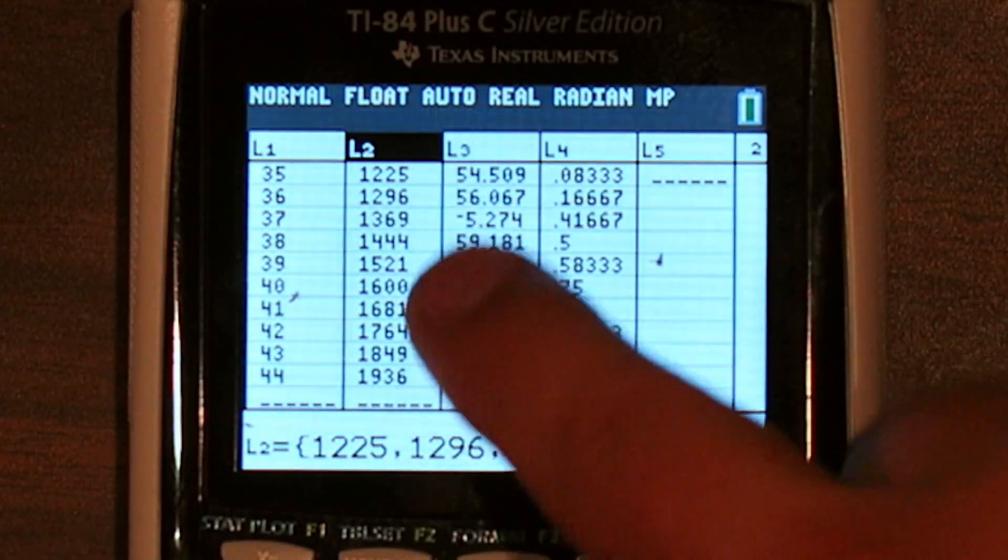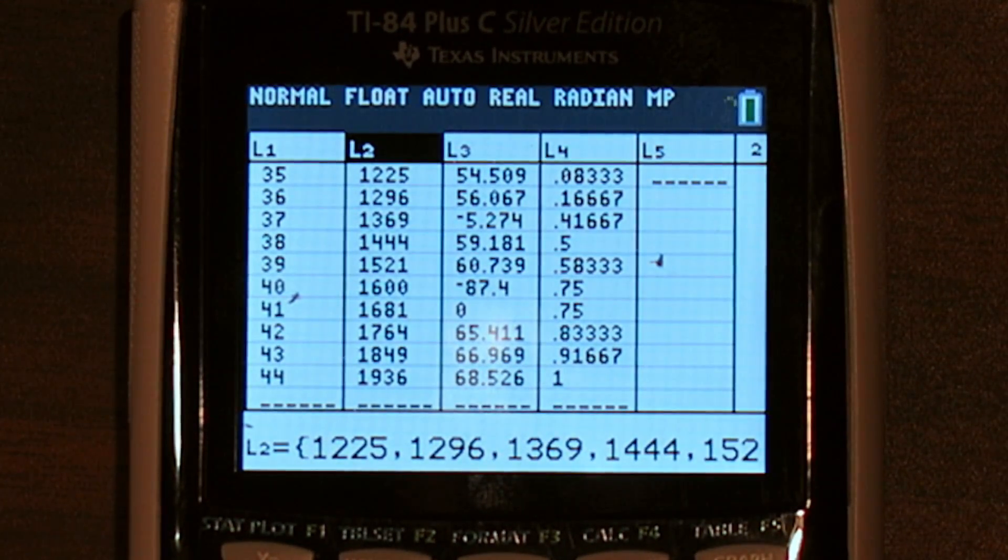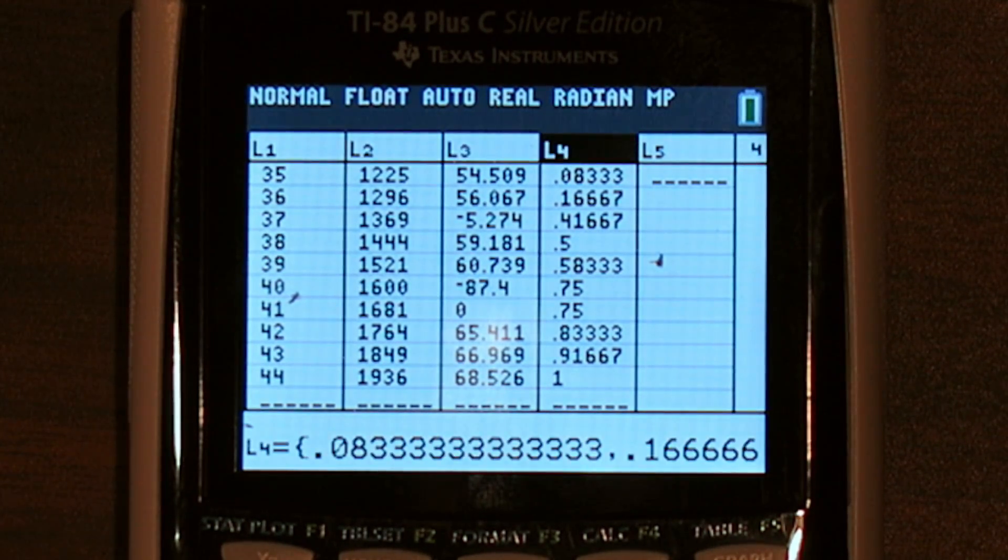See, here's list 1, 2, and it even preserved the data that was in list 2. So let me show you how to avoid this problem in the future.